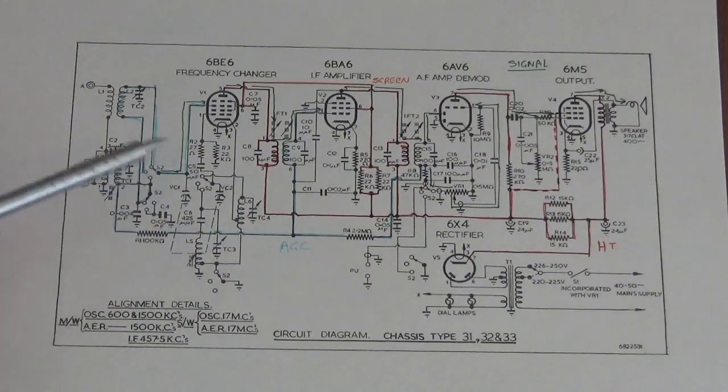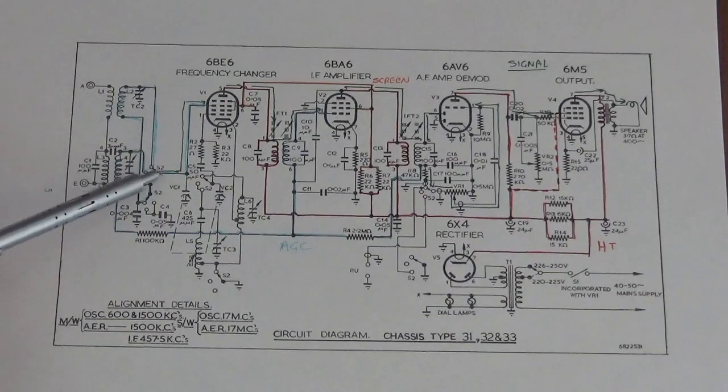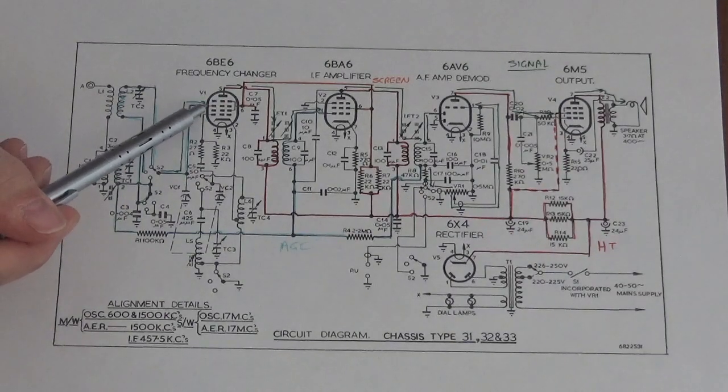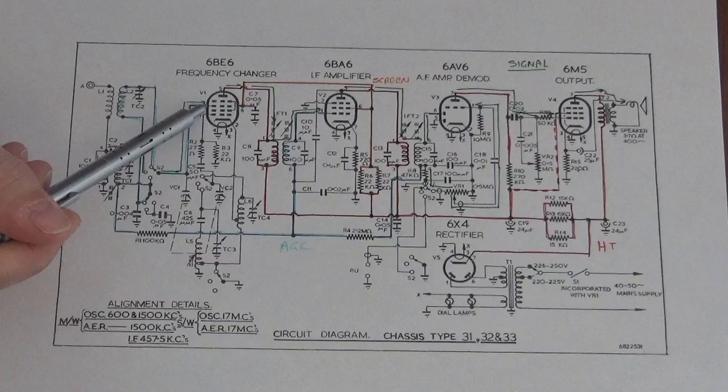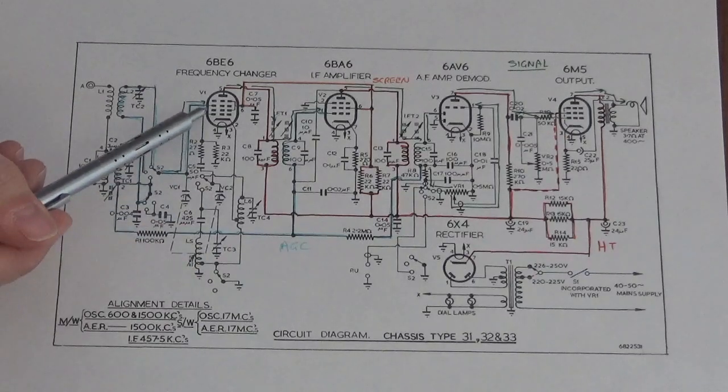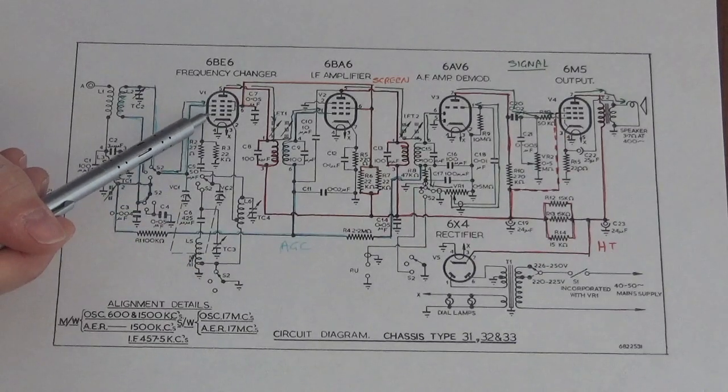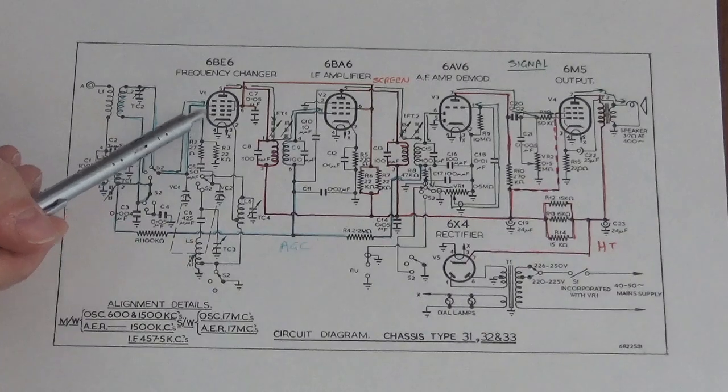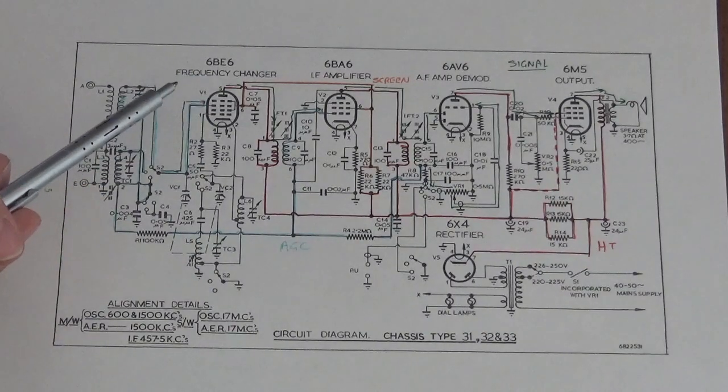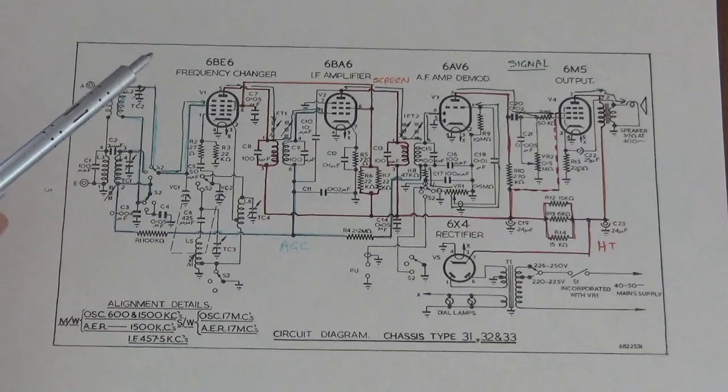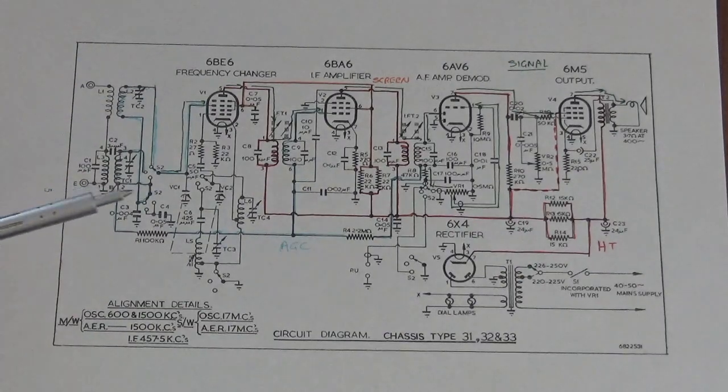The aerial signal is applied to this grid on the valve and the local oscillator is applied on the control grid. We get mixing happening in the valve, and at the anode we have the potential for two different frequencies: the sum and the difference of the local oscillator and the aerial tuned circuit.